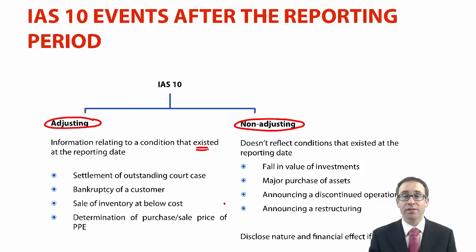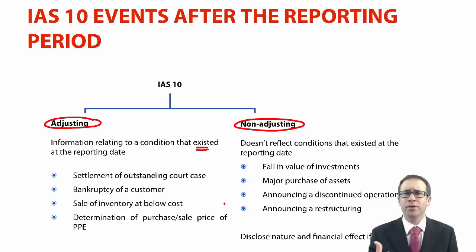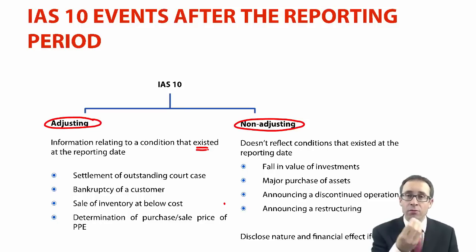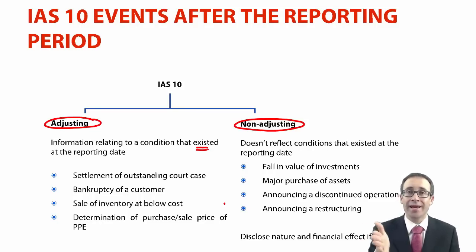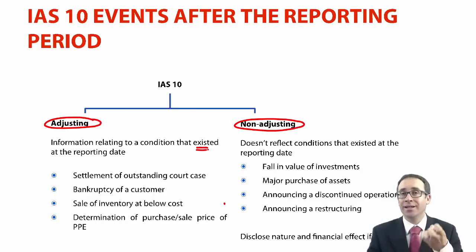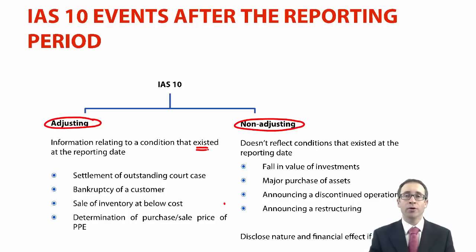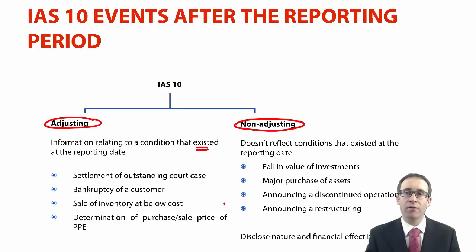Non-adjusting events include falls in the value of investments. Thinking about efficient market hypothesis, information is impacted in the share price once it becomes known — and it's only known after the reporting date. The condition did not exist at the reporting date, so the fall in value of investments is not adjusted at the reporting date. You just take the fair value of investments at the reporting date and use that, regardless of whether it goes up or down before the accounts are signed off.